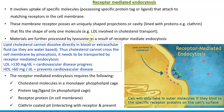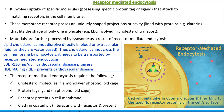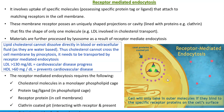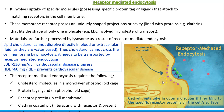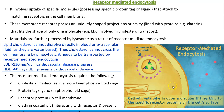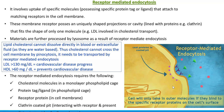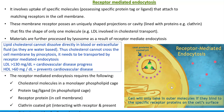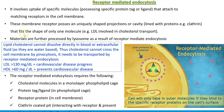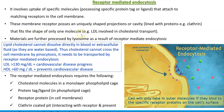This membrane receptor possesses a uniquely shaped projection or cavity. You can see a cavity here which is lined with some kind of a protein. In this particular cavity, you can see a violet-colored coat. Clathrin is a type of protein present in the pit region. It is called as a coated pit region that fits the shape of only one molecule.